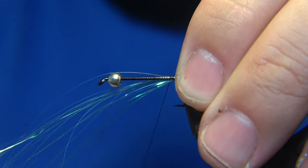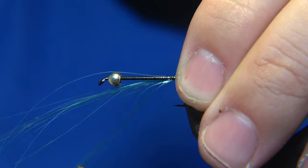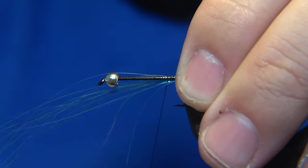And then I bend it, do a bend on it, so it's going to stick to the hook completely. And that will be the tail of the fly.